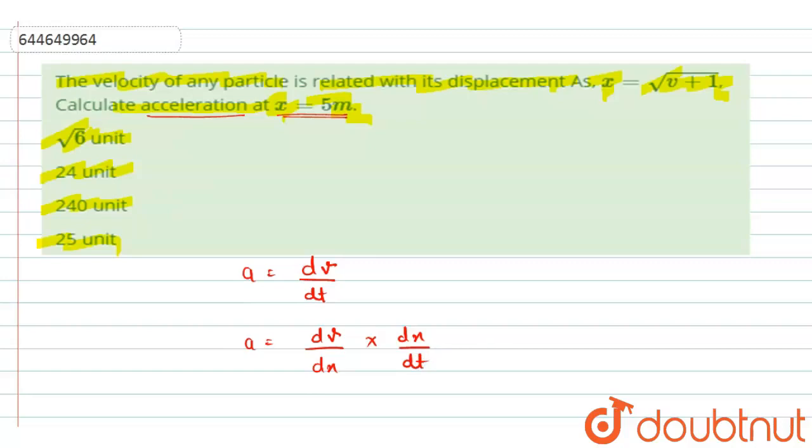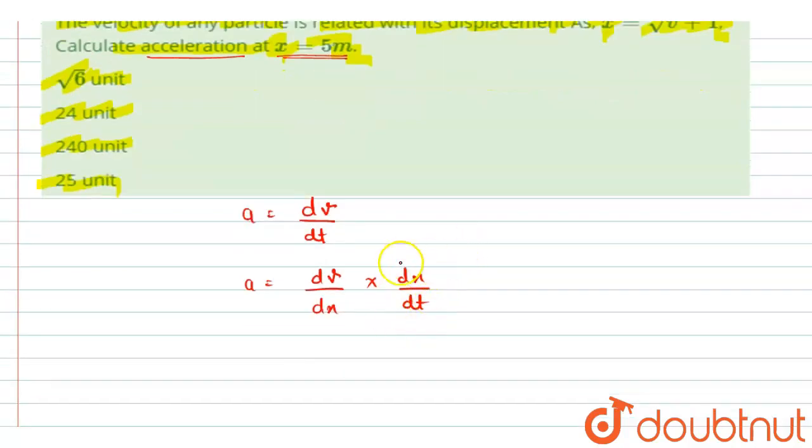Right, and dx over dt is nothing but the rate of change of displacement, that is given as velocity. So acceleration we can write as v into dv by dx. So this is the expression for acceleration in terms of displacement.